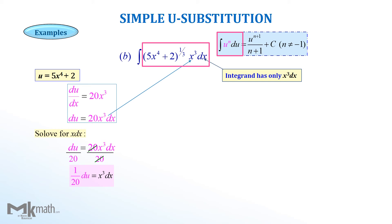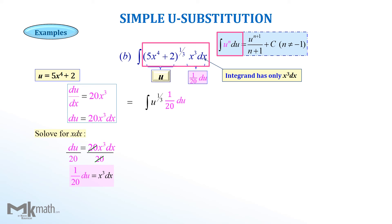Now we transform the original question in terms of u and du. Since 5x to the fourth plus 2 is u and x cubed dx is one-twentieth du, the integrand is now u to the one-third power times one-twentieth du. Since one-twentieth is a constant, we pull it out. The problem becomes one-twentieth times the integral of u to the one-third power du.